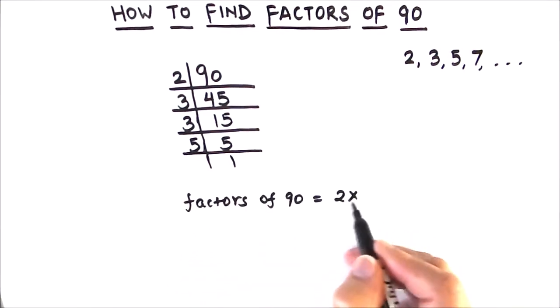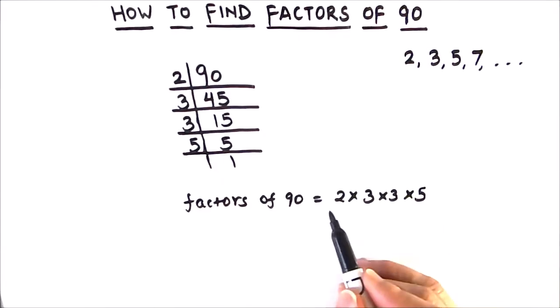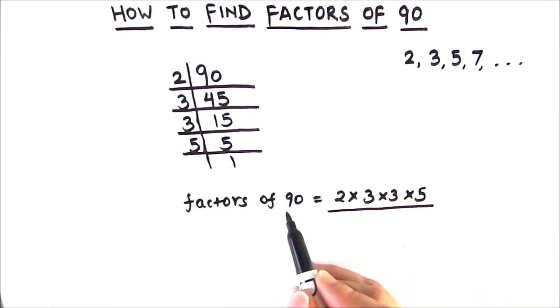2 times 3 times 3 times 5. So these are the factors of 90. This is how we can find factor of any number by using the prime factorization method. I hope this video is helpful to you.